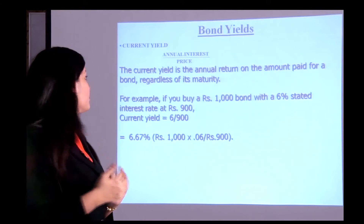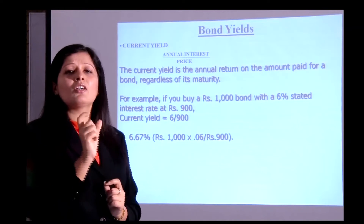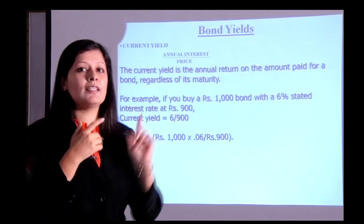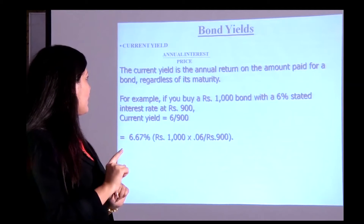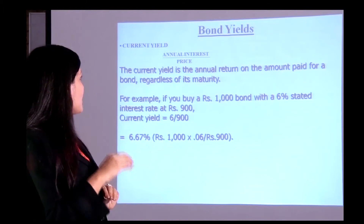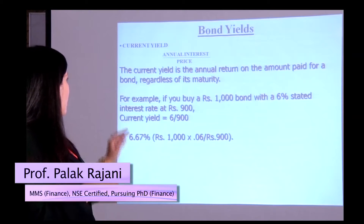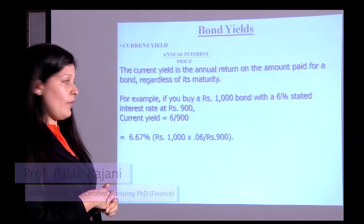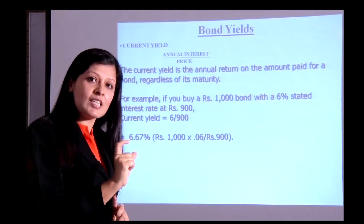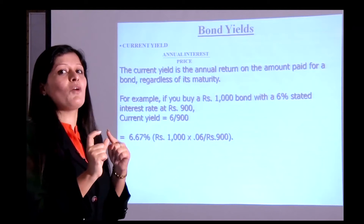Yield is commonly measured in two ways: current yield and yield to maturity. Current yield is the annual return on the amount paid for the bond, regardless of maturity. It is calculated as annual interest divided by price. For example, if you buy a ₹1000 bond with a 6% stated interest rate at ₹900, the current yield is (1000 × 0.06) / 900 = 6.67%. So even though the coupon rate is 6%, your real rate of return is 6.67% because you bought below face value.